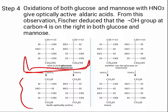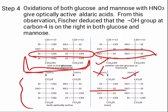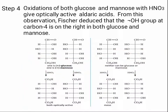Fischer understood that the OH group at carbon 4 must be on the right-hand side, because if it were on the left, oxidation would give a meso compound. If the OH at C4 were on the left, one of the two would be optically active and the other would not. But the experiment shows that both glucose and mannose give optically active aldaric acids, so Fischer deduced that this OH is on the right.